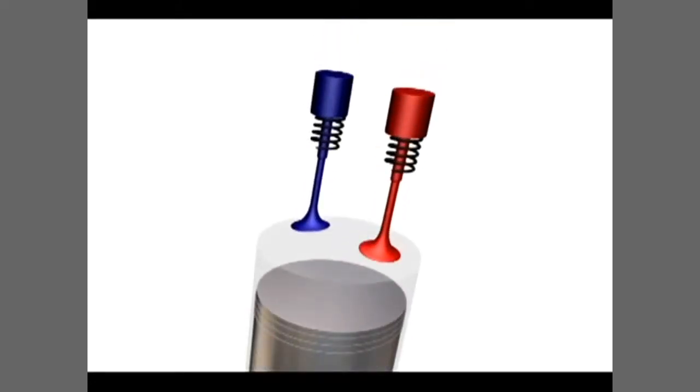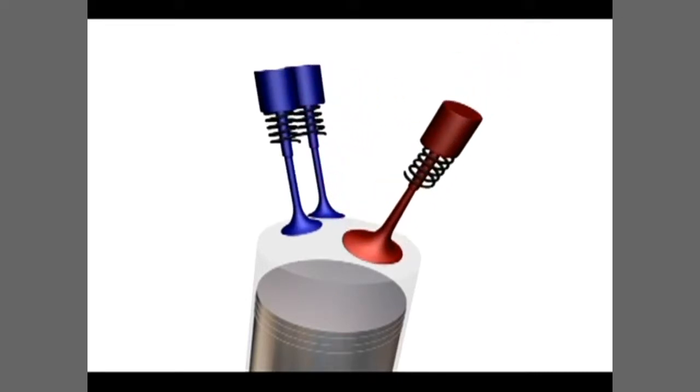The number of valves that engines have varies. Older engines tend to have one intake and one exhaust valve. Some engines have two intake and one exhaust valve. Most high-performance engines use two intake and two exhaust valves.